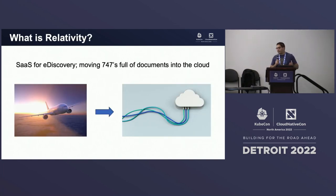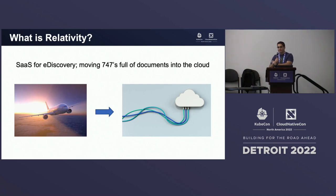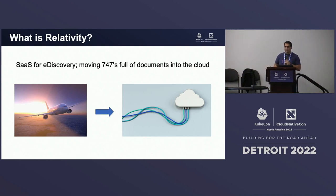What is Relativity? If you remember Tannenbaum's statement about never underestimating the bandwidth of a station wagon full of cassette tapes going down the highway — Relativity is attempting to solve the same thing for 747s full of documents. When two companies sue each other, you go through a discovery process with tons of paperwork. Relativity, about 20 years ago, started moving into the e-discovery space. Around 198 of the top 200 law firms now use our platform. If you're not a legal nerd, you've probably never heard of us, but we do a lot of documents and NLP on those documents.